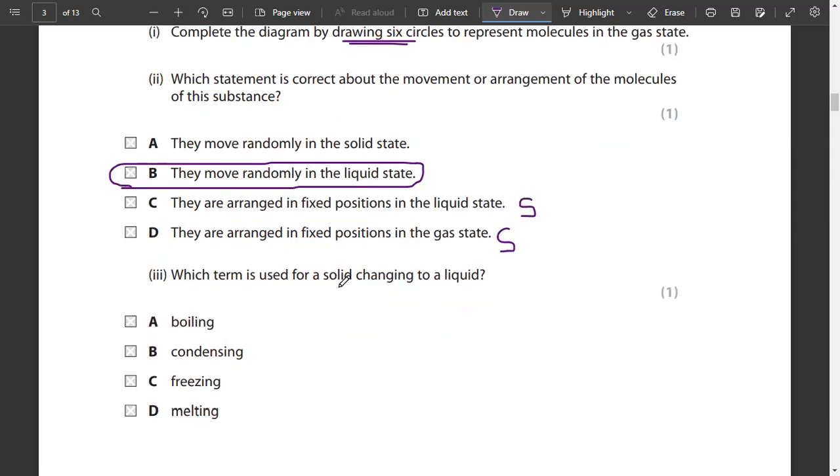Which term is used for a solid changing to liquid? Whenever something melts, like ice - ice is a solid, it melts into water. So we call this solid to liquid change of state. It is known as melting. Option D would be your correct answer.